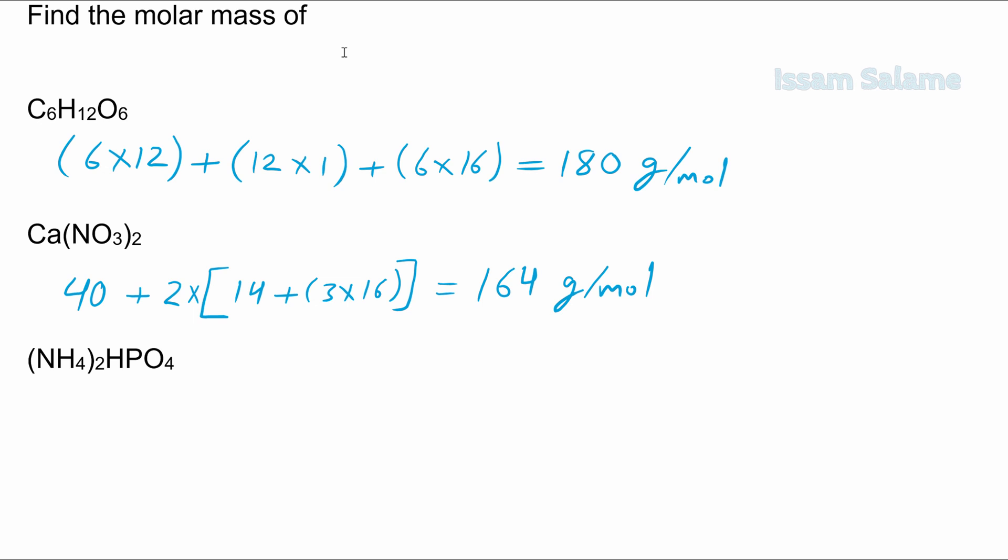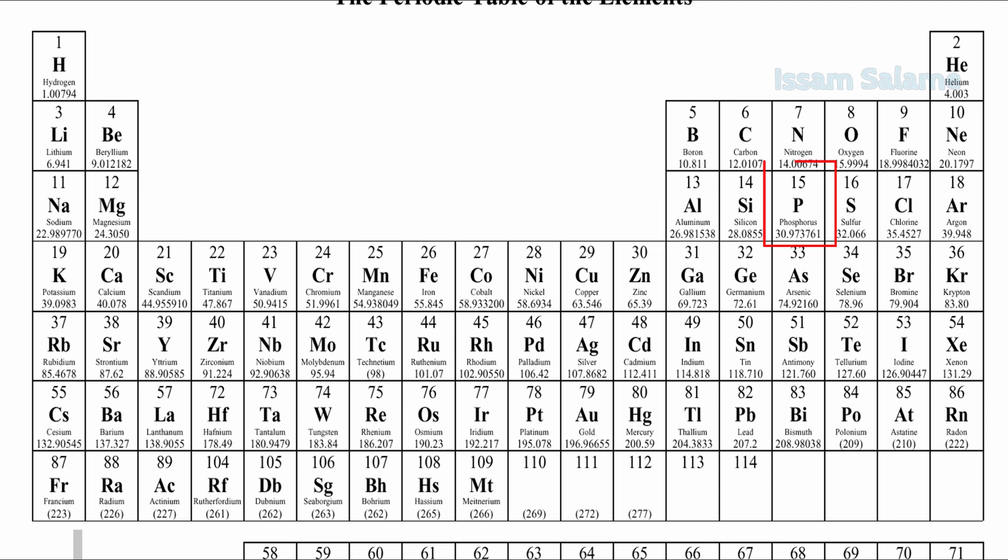For the last one, let's check the molar mass for phosphorus, oxygen, hydrogen, and nitrogen. The molar mass of phosphorus to the nearest tenth is 31, oxygen is 16, nitrogen is 14, and hydrogen is 1.